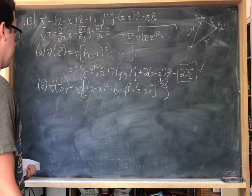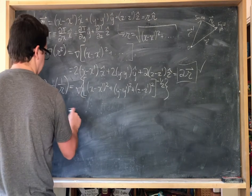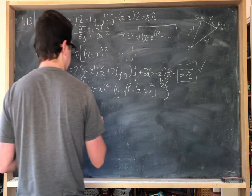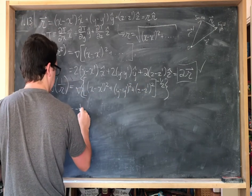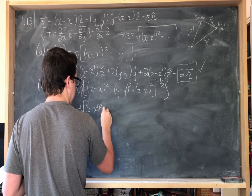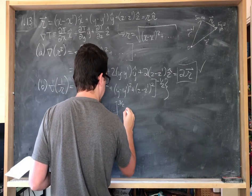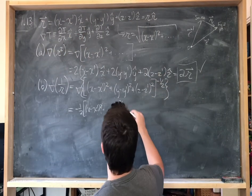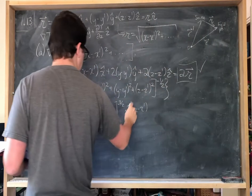We are going to derive this with respect to each of the three Cartesian variables x, y, z. For the d/dx term in the x-hat direction, we bring down the negative one-half, leaving the big quantity to the minus three-halves, and then multiply by the chain rule derivative of the inside with respect to x, which is two times (x minus x-prime). The twos cancel with the one-half.